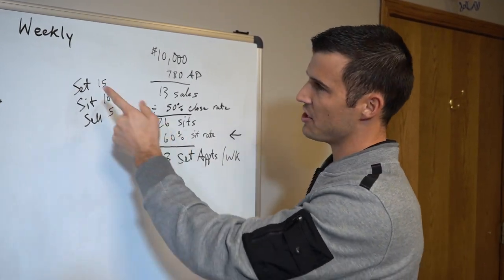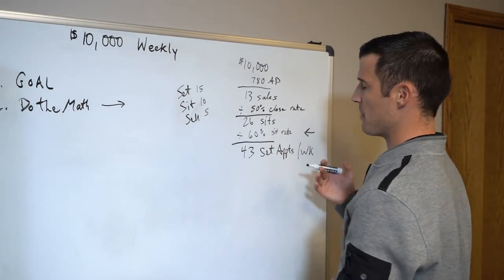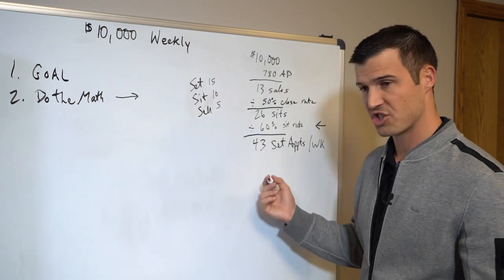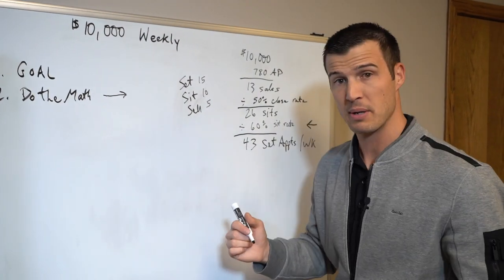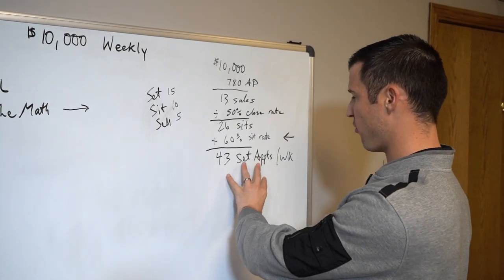You need an appointment setter because when you got to run, you got to set 43 appointments and actually go hoping to sit down with 40 people, that's a lot. You need to set around 43 appointments a week to do $10,000.